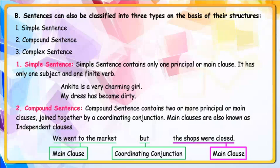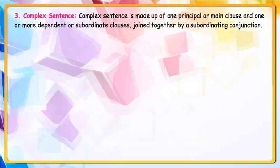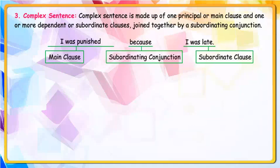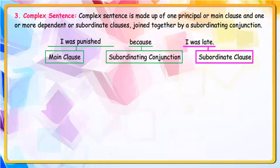Complex Sentence is made up of one principal or main clause and one or more dependent or subordinate clauses joined together by a subordinating conjunction. For example: I was punished because I was late. Here, 'I was punished' is the main clause, 'because' is the subordinating conjunction, and 'I was late' is the subordinate clause.